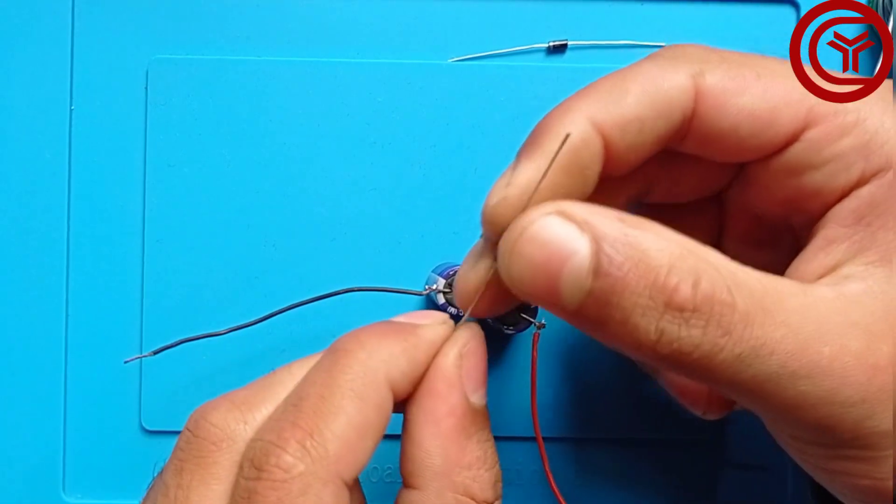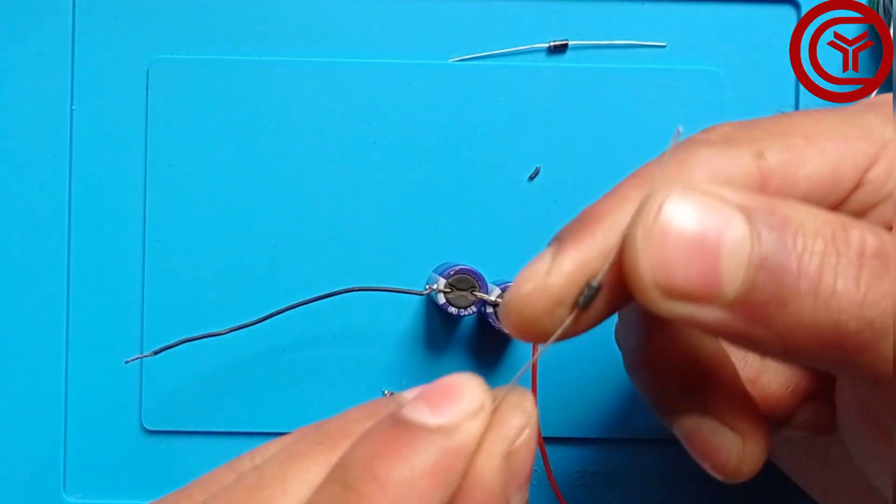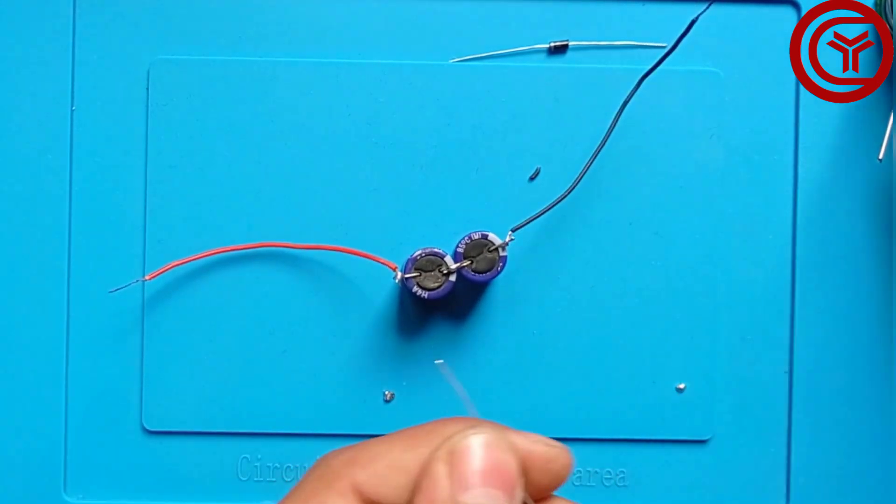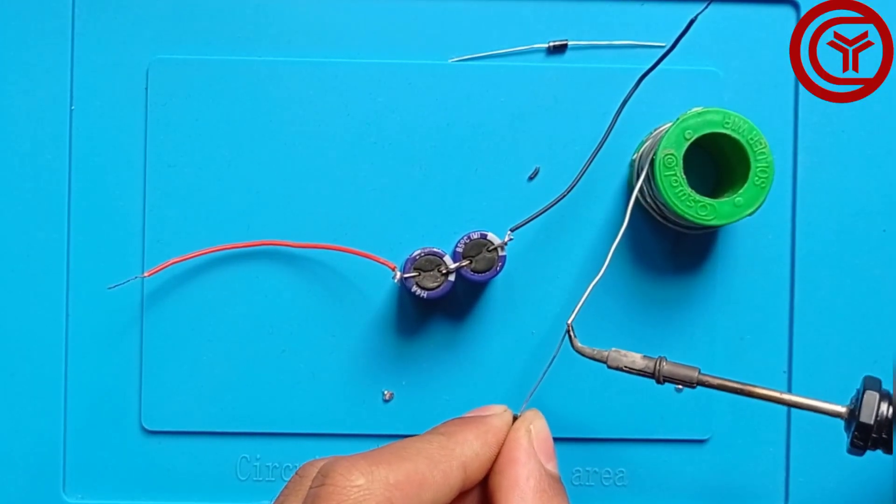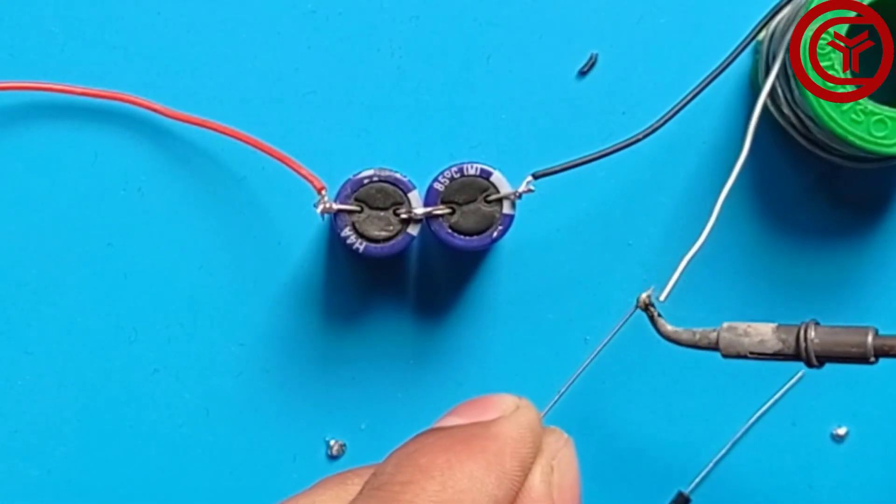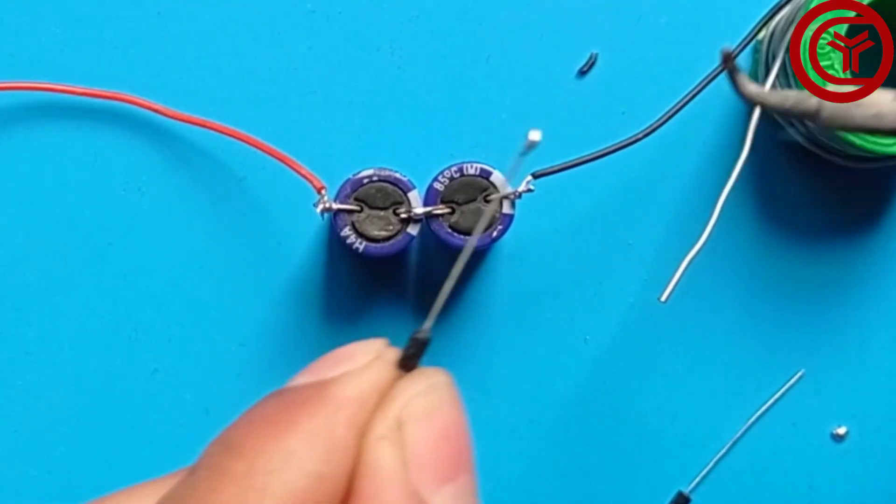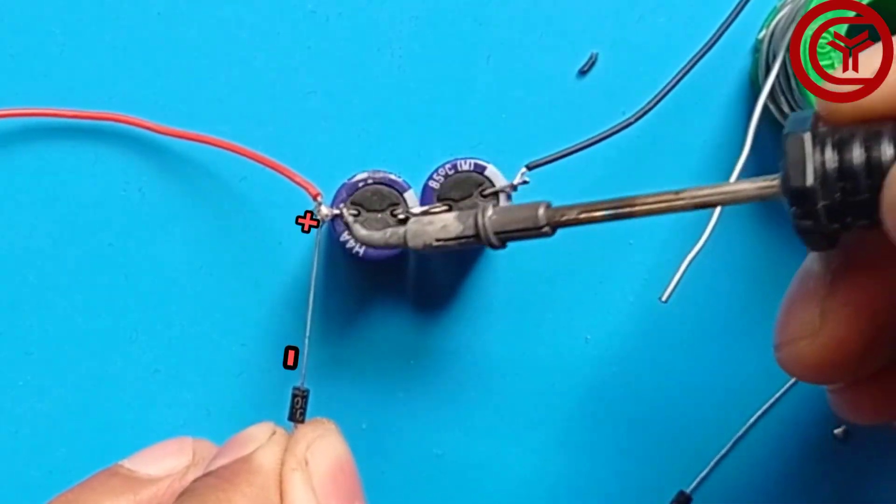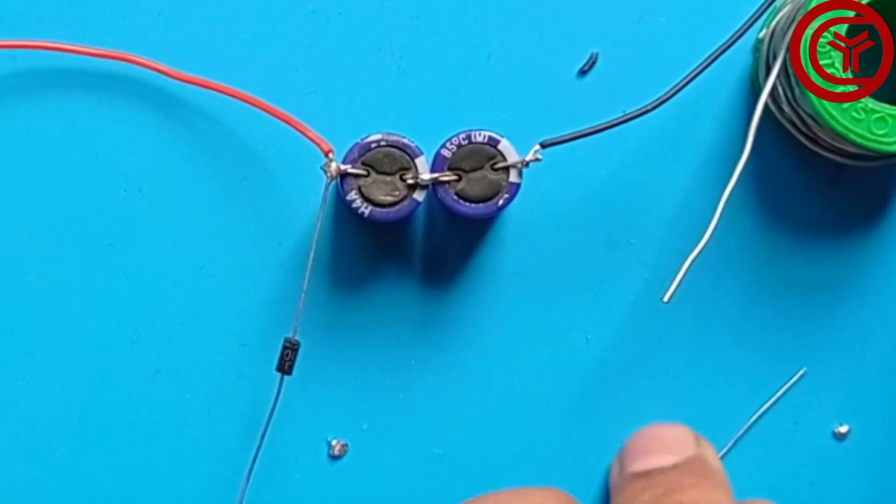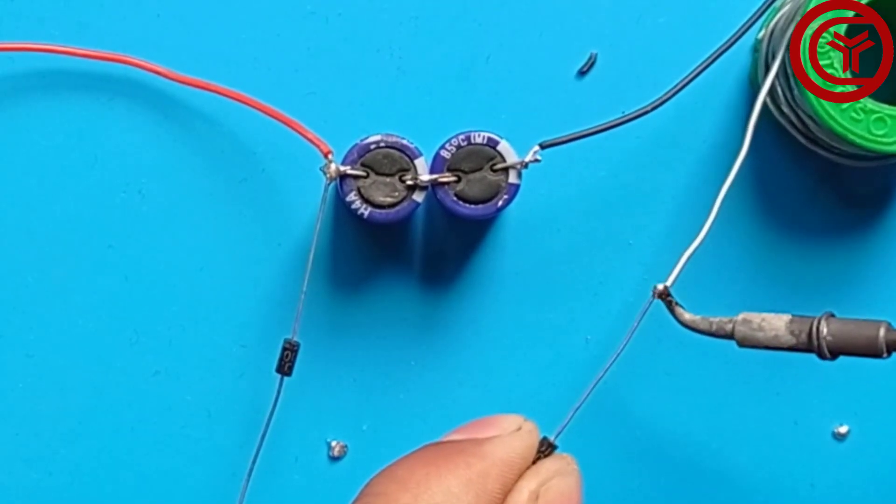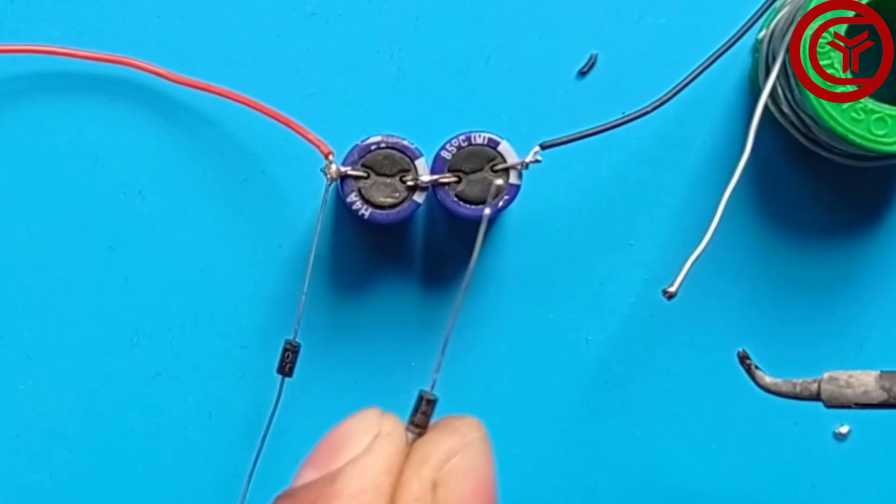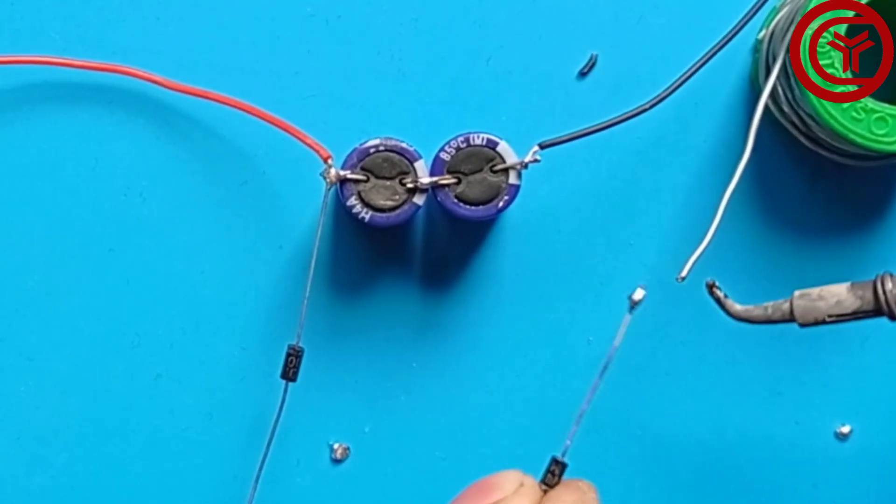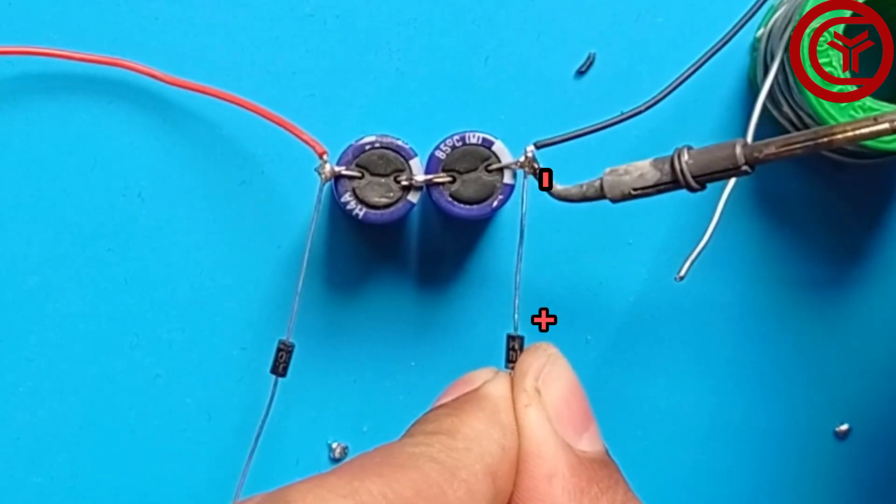Now we'll take this rectifier diode. What we have to do is solder the negative side of the diode with the positive of the capacitor, and then with the negative side of the capacitor like this.